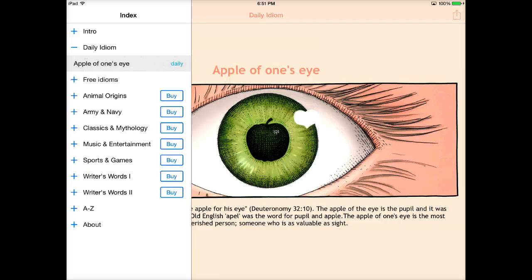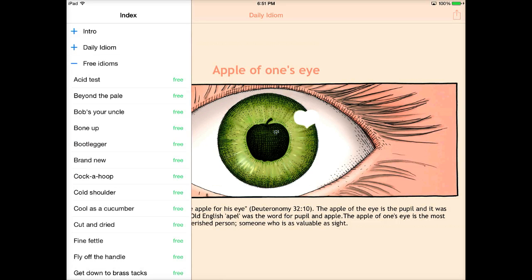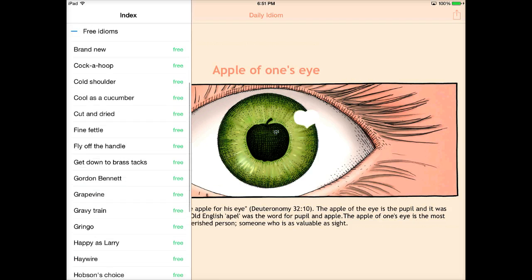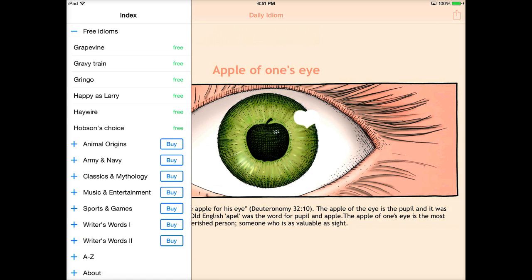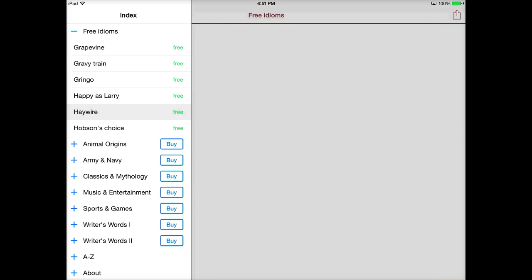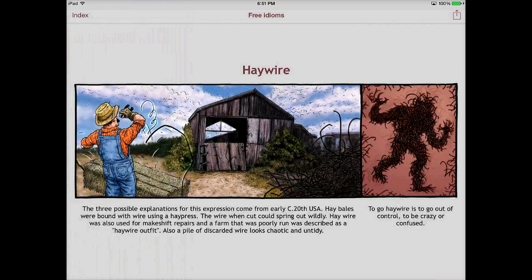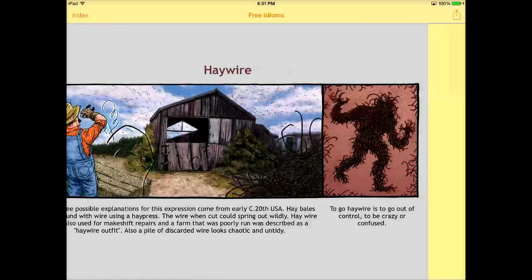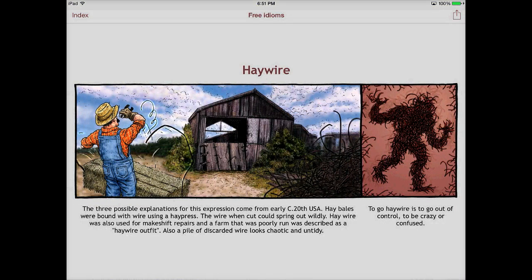You can return to the index and you can see a list of free idioms too, which they have quite a few that are free that you can look up and see the origins of those words as well. For instance, haywire is a very common one that you hear. So it just gives you these really fun illustrations and explanations of where they came from.